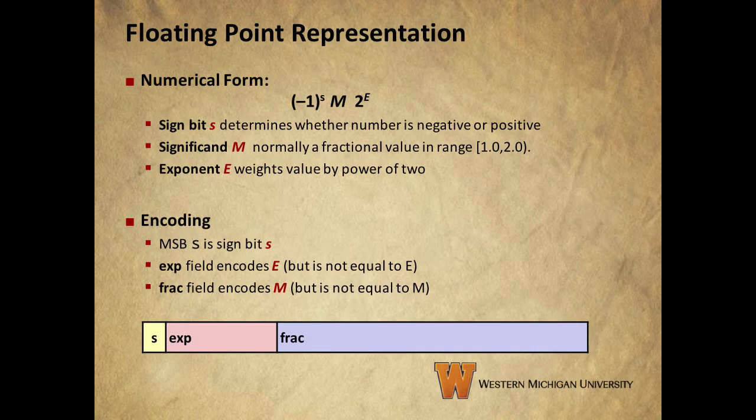The numerical form is seen here. S is our sign bit, and simply tells us whether the number is negative or positive. M is the significand, and has a fractional value in the range of 1.0 inclusive to 2.0 exclusive. The exponent, E, weights the value by a power of 2. The most significant bit contains the sign bit. The next set of bits, or the EXP field, encodes E, the exponent, and the remaining bits, the FRAC field, encode M. Note that we say encodes because the EXP and FRAC fields encode but are not equal to E and M, respectively.